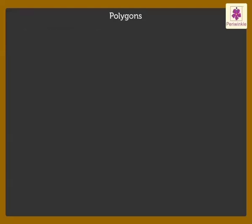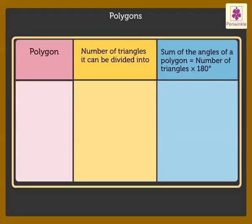Let us find out the sum of the angles of a few polygons. To find out the sum of the angles of polygons, we need to find out the number of triangles it can be divided into and then use the formula to find the sum of the angles of polygons.